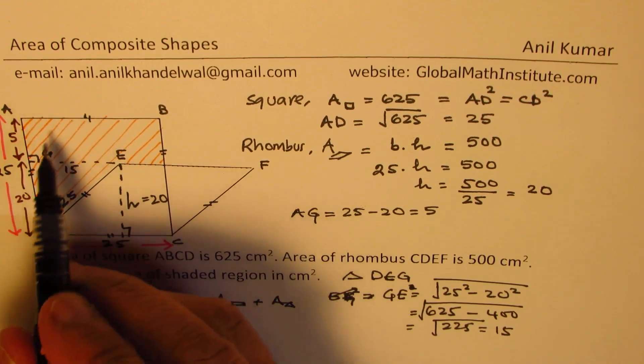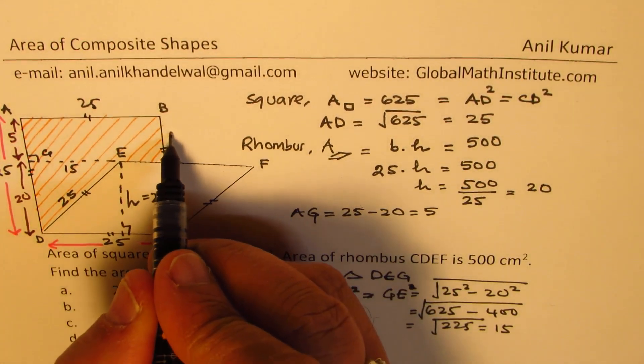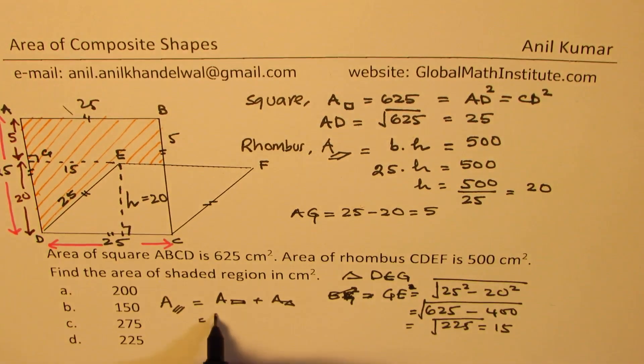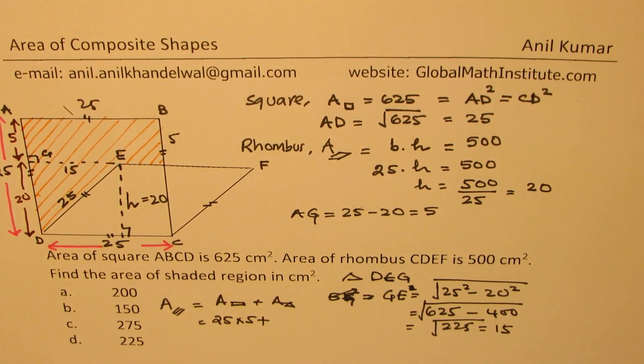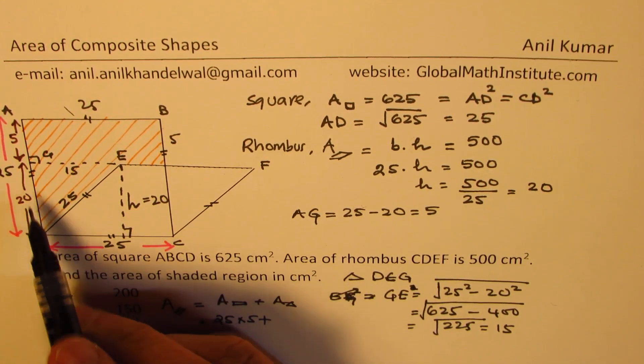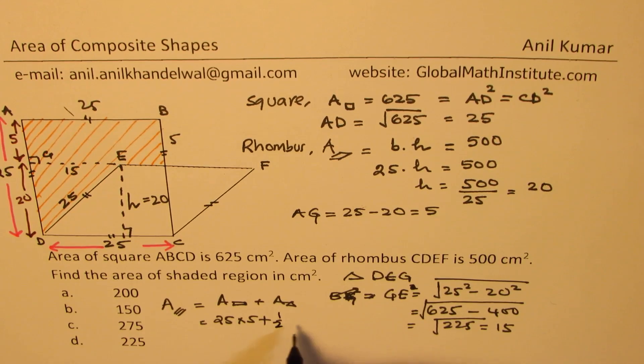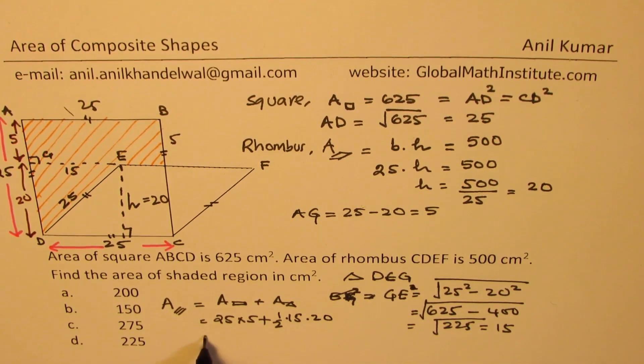The area of the rectangle is 25 times 5. Plus area of the triangle, which is half base into height. So it is half of 15 times 20. So we can do this calculation.